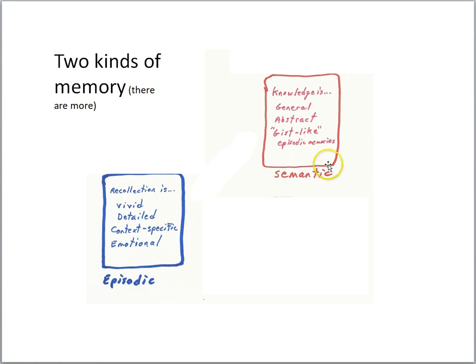So semantic memory is information about the world, including ourselves and our history, whereas episodic memories are those kinds of memories where we can transport ourselves back in time and relive the past event.